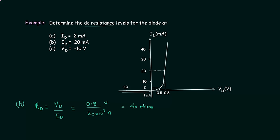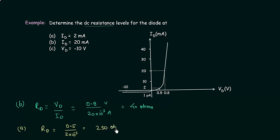Now we will solve case A, where Id is equal to 2mA. Rd equals Vd by Id, and from the characteristic Vd is 0.5V for 2mA. So Rd equals 0.5 divided by 2mA, and when you solve this you get 250 ohms. This is the answer for case A.